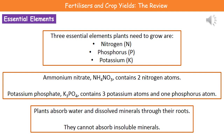Welcome to our review on fertilizers and crop yields. The first thing we need to understand is that plants need certain things to grow, and what they need are three essential elements: nitrogen, phosphorus, and potassium.